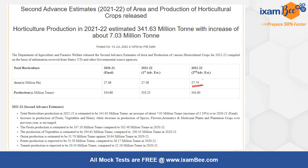As per the second advance estimate it is 27.74 million hectares. The first advance estimate was 27.56 million hectares, now it is 27.74. For production in million tons, it is 341.63 million tons, while the first estimate was 333.25 million tons.